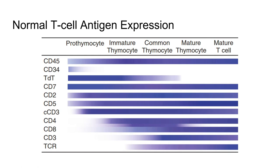CD34 and TDT are found on immature T lymphocytes as expected. CD2, CD3, CD5, and CD7 are pan T cell markers, with CD2 and CD3 being the most specific for T cells. In the thymus during T cell development, T cells will co-express CD4 and CD8 and eventually pick one or the other. As they mature, they gain more surface CD3 along with T cell antigen receptor, or TCR.